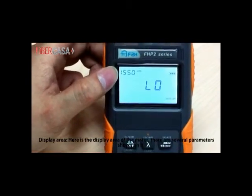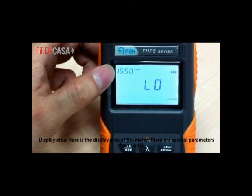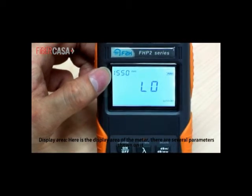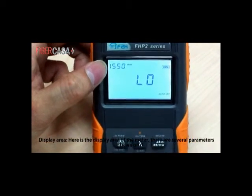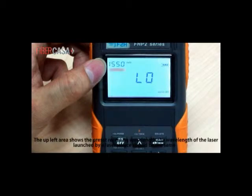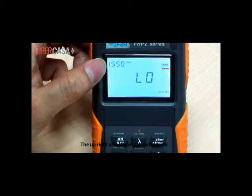Display area. Here is the display area of the meter. There are several parameters shown on it. The upper left area shows the preset receiving wavelength. The wavelength of the laser launched by a laser source should be the same. The upper right area shows the battery life. The middle area shows the input power. The down right area shows the auto power off function.